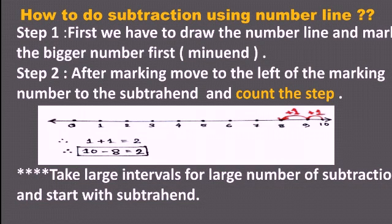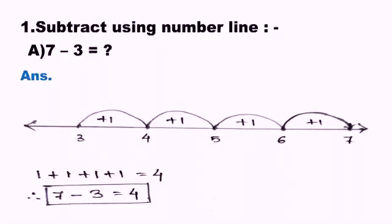The next procedure is when we solve large number subtraction on a number line. At that time, we have to take a large interval — meaning 10 units, 20 units — this large interval for large number subtraction. And we start with the subtrahend.